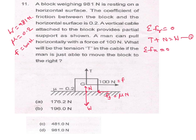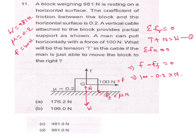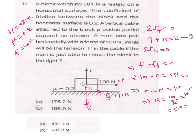From horizontal forces, the summation of all horizontal forces should be 0 for equilibrium. Since the block is just able to move, F minus frictional force equals 0. So, 100 minus 0.2 times N equals 0. From here, 0.2 N equals 100, so N equals 100 divided by 0.2, which gives N equal to 500 N.